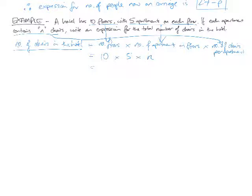What do we do when we're multiplying two knowns together? We don't just remove the times sign and make it 105 - that would be a no-no. 10 times 5 is 50 times the number of chairs in the apartments.